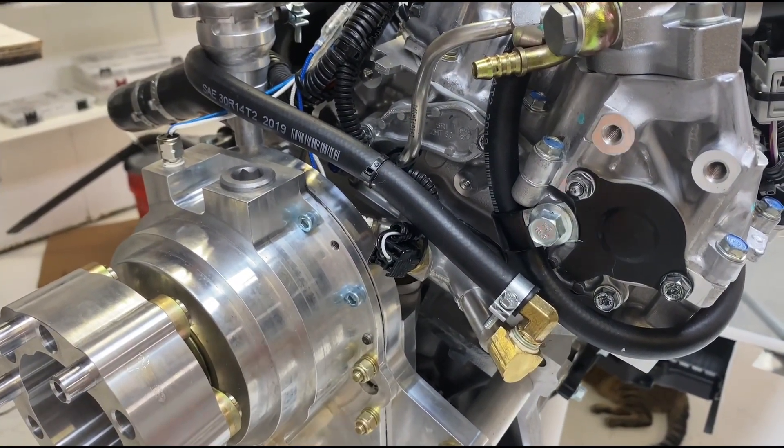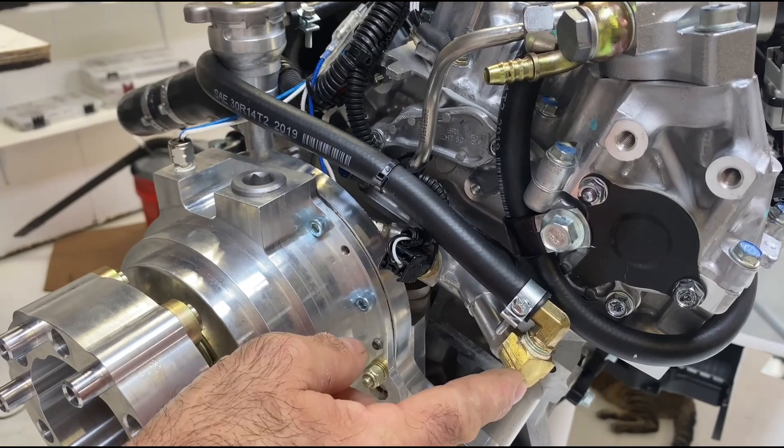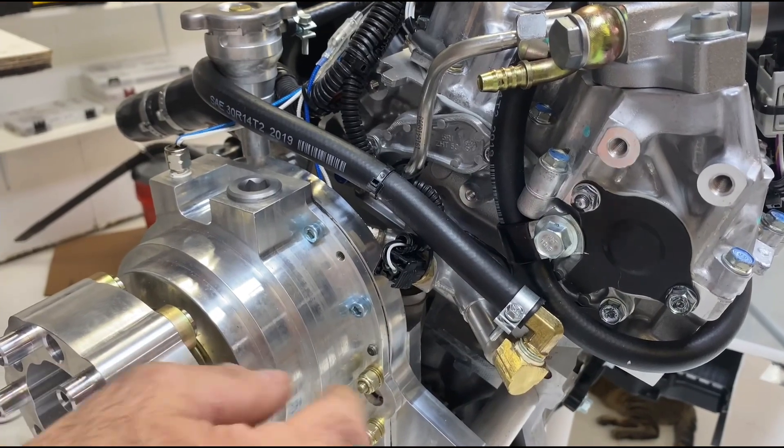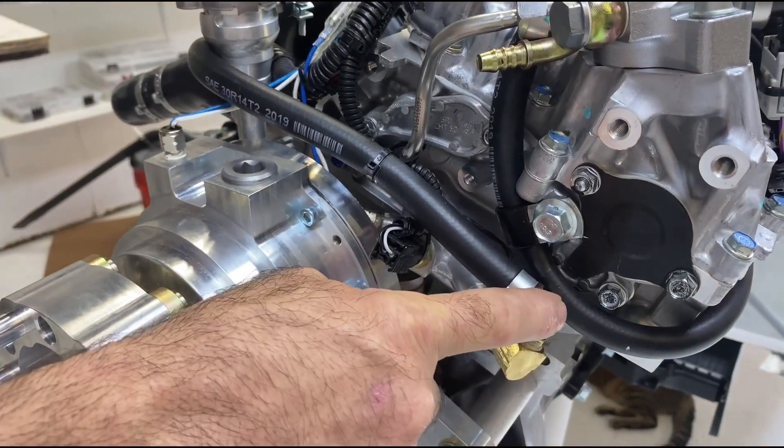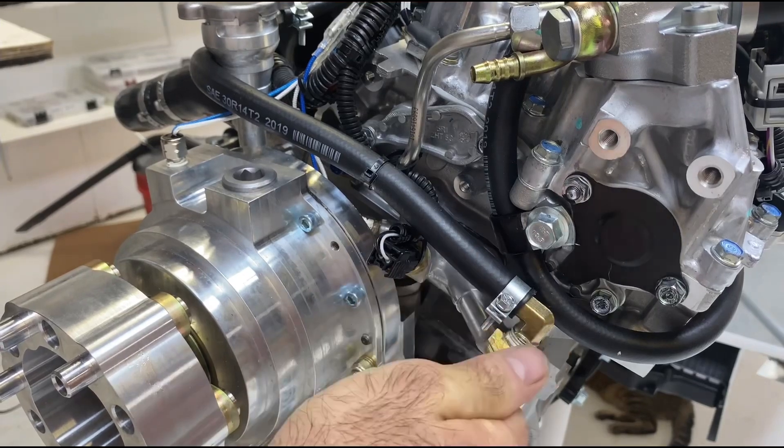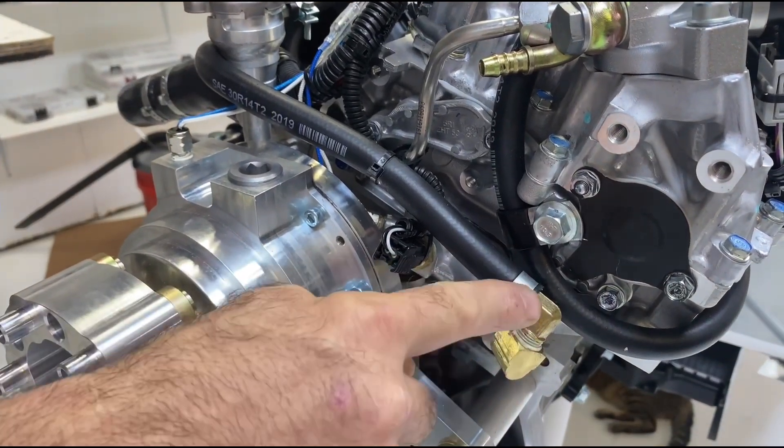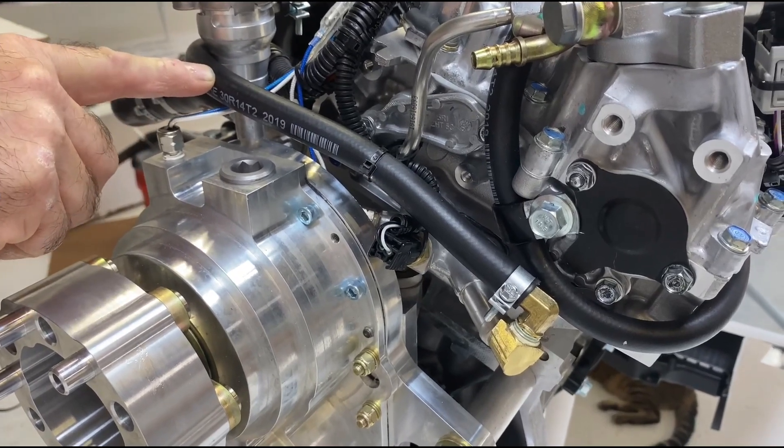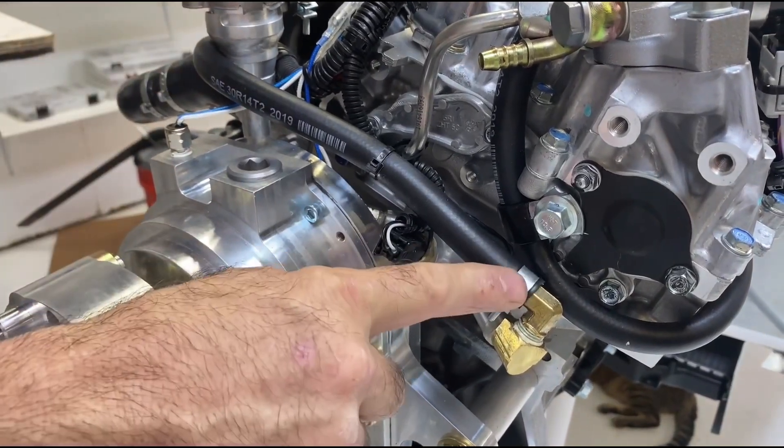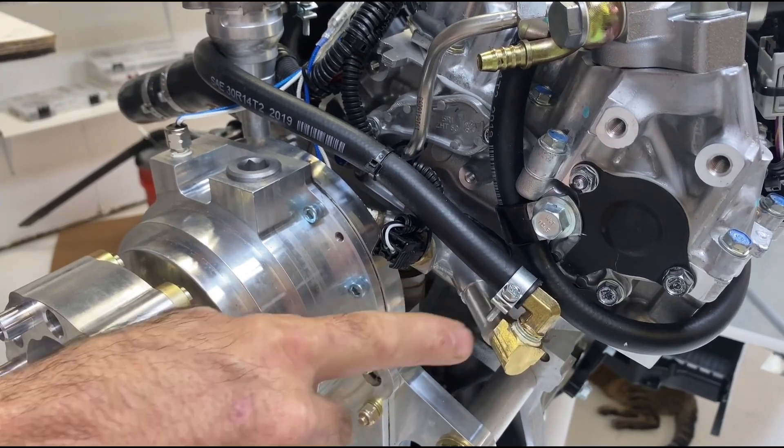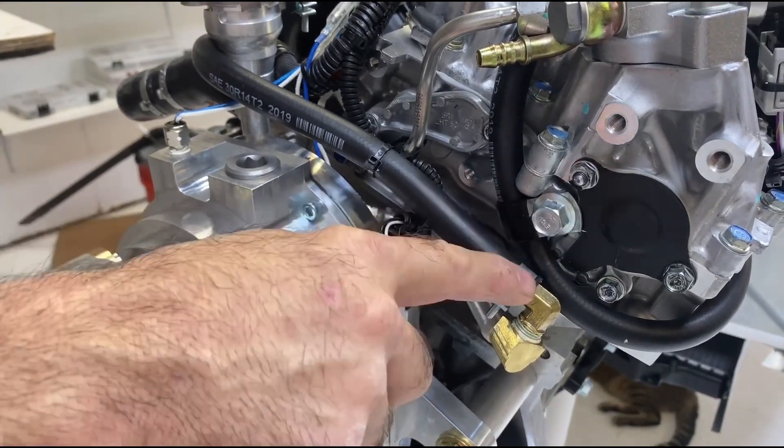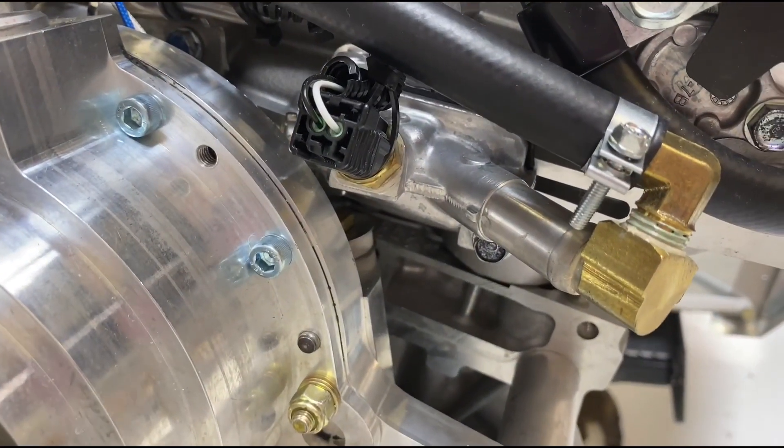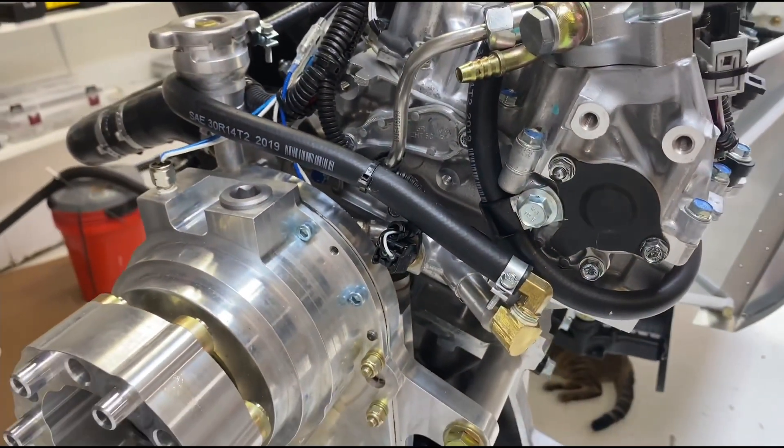So install the 90 degree fitting first, turn it almost as far in as you want, have it facing the propeller, and then install the second barbed fitting into that and then rotate both of them up in order to get what you see here where the hose can go up and above the gearbox. The clamps that are supplied, you will tighten them almost so that they are closed, and that works just fine with that diameter hose and that hose barb.